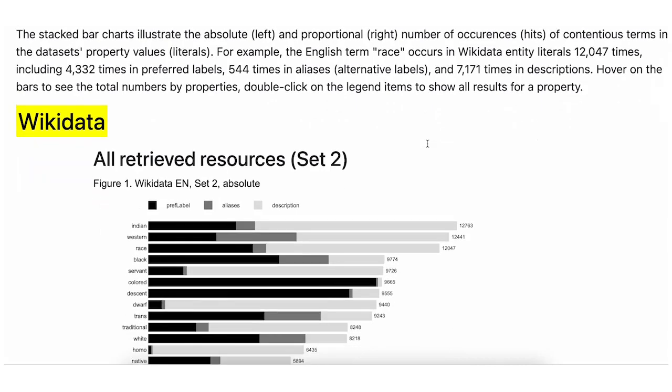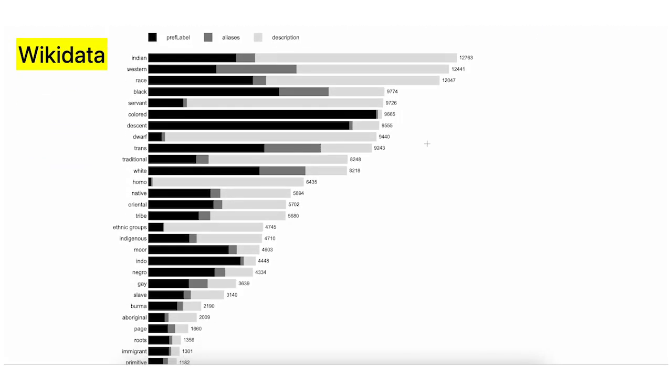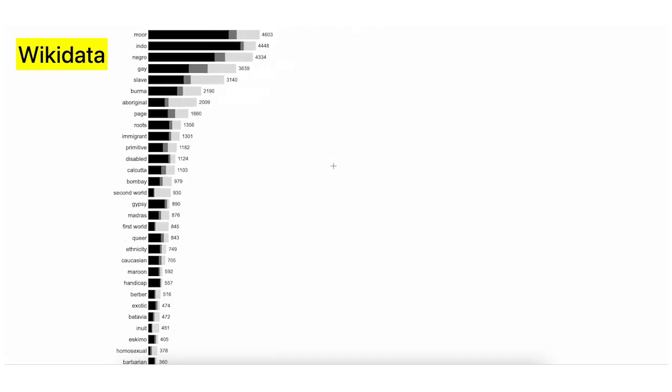We found that such terms are still being used in datasets. Apart from Wikidata, we found contentious terms in lexical databases — English and Dutch wordnets — that are a foundation of online dictionaries. We also analysed the Art and Architecture Thesaurus from the Getty Institute, which is popular in the cultural heritage domain. We gathered statistics about the usage of contentious terms: how many times they occur and in what types of literals.